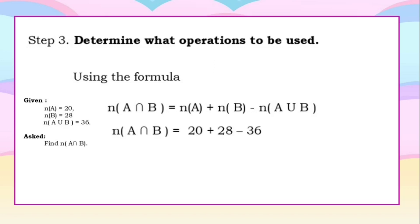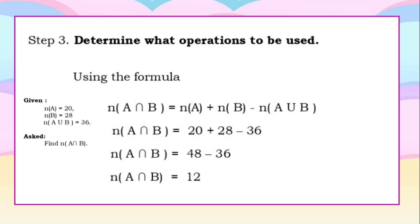Let us now substitute the values. The cardinality of set A is 20, the cardinality of set B is 28, and the cardinality of set A union B is 36. So the cardinality of set A intersect B equals 20 plus 28 minus 36, which gives us 48 minus 36, equal to 12. Therefore, the cardinality of set A intersect B is equal to 12.